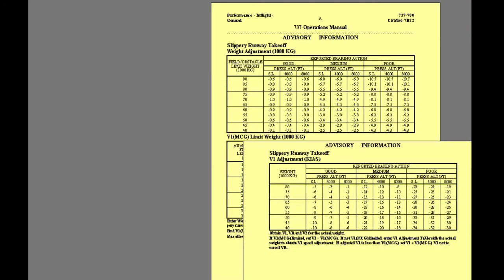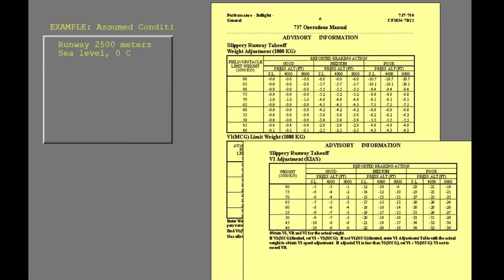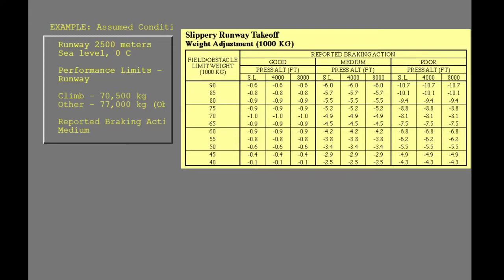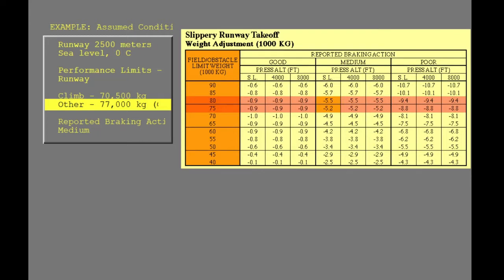An example will be used to show how slippery runway data adjustments are applied. Assume takeoff data is being computed for a sea level airport with a runway 2,500 meters long on a 0 degree Celsius day. The climb limit weight is 70,500 kilograms and the weight limitation due to all other considerations is 77,000 kilograms, limited by obstacle considerations. We will assume a reported braking action of medium. First, we will look up the weight adjustment, entering the chart with the dry runway field length or obstacle limited weight and the reported braking action.